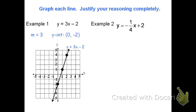In our next example, identify the slope and y-intercept for me. The slope is negative one-fourth and the y-intercept is zero comma 2.